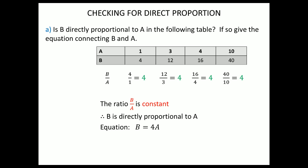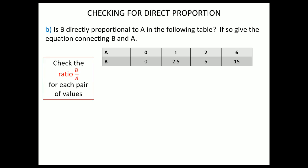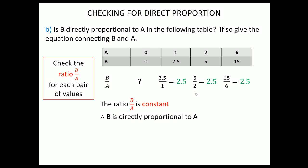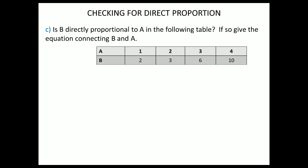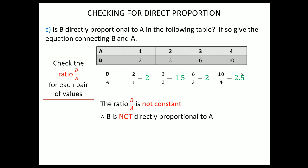Is b directly proportional to a in the next table? We check the ratio b over a for each pair: 2.5 divided by 1, 5 divided by 2, 15 divided by 6 — they all give 2.5. The ratio is constant, so b is directly proportional to a and the equation is b = 2.5a. In the third table the ratio is not constant — 2 divided by 1 gives 2, 3 divided by 2 gives 1.5, and so on — so it is not directly proportional.